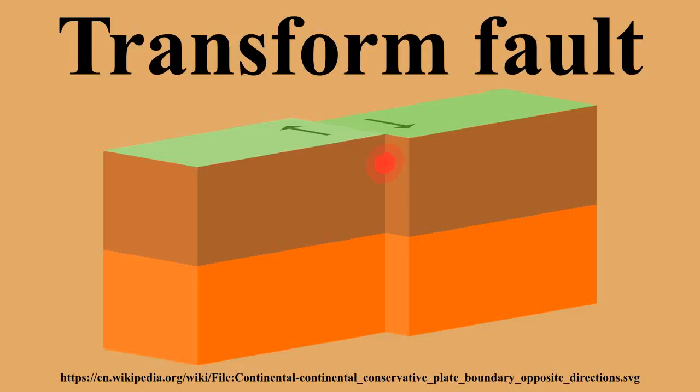Transform faults are closely related to transcurrent faults and are commonly confused. Both types of faults are strike-slip — a side-to-side movement. However, transform faults end at the junction of another plate boundary or fault type, while transcurrent faults die out without a junction.